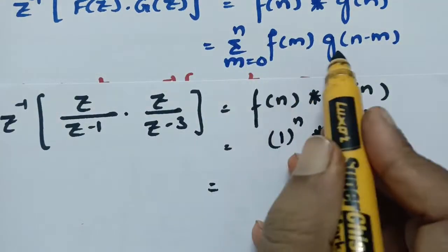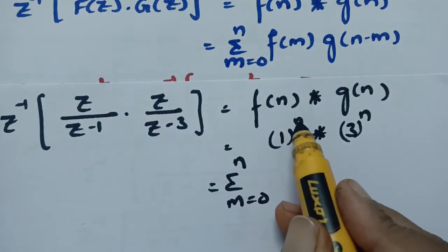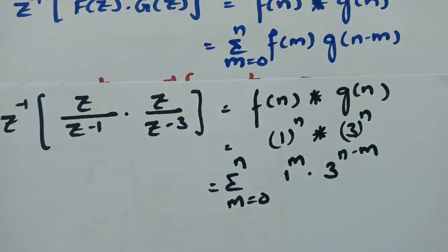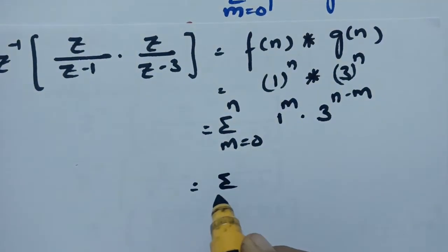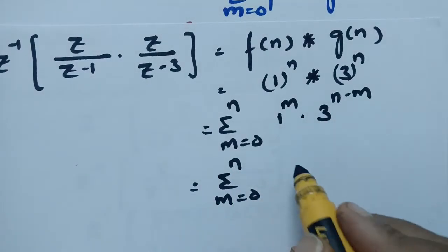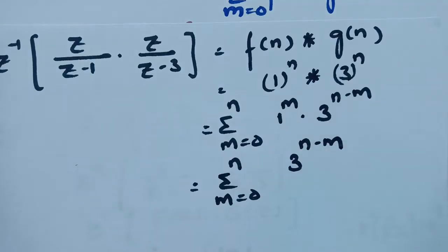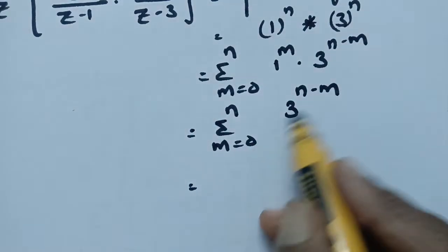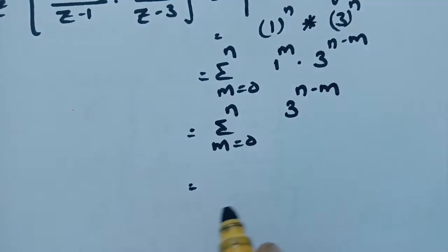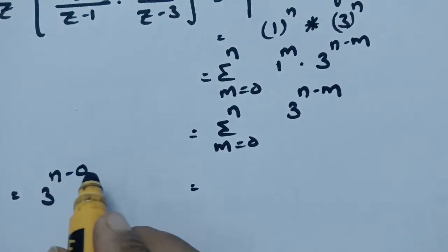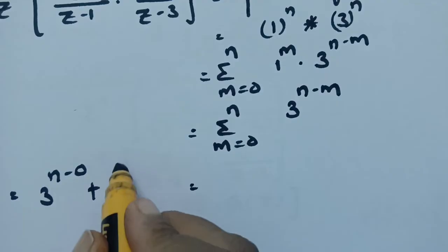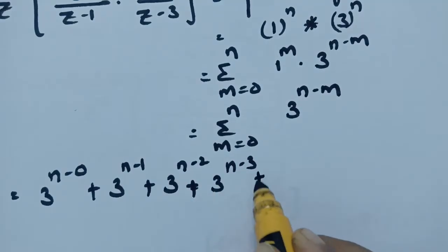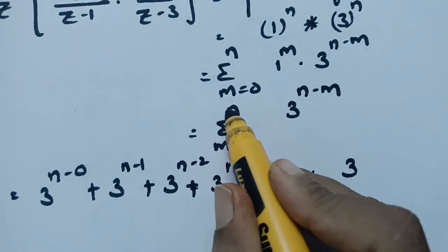This simplifies to sigma from m=0 to n of 3^(n−m), since 1 times anything equals itself. Substituting m = 0, 1, 2, 3, ... up to n: when m=0 we get 3ⁿ, when m=1 we get 3^(n−1), when m=2 we get 3^(n−2), and so on, with the last term when m=n giving 3^(n−n) = 3⁰.